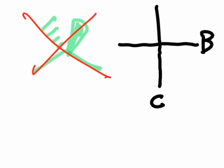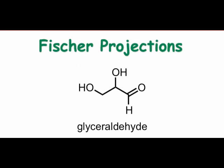To explore the nature of the Fischer projection convention, let's take a look at the simplest monosaccharide: glyceraldehyde. Glyceraldehyde possesses only three carbon atoms and is a member of the triose family. It possesses one stereocenter near the center of the molecule.